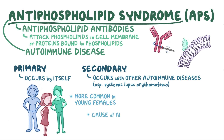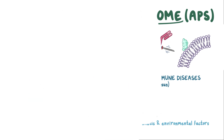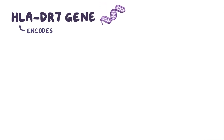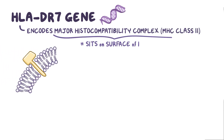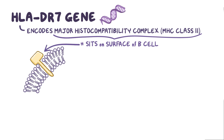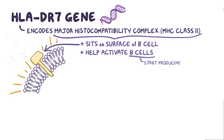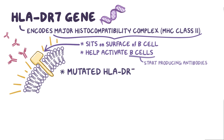The exact cause of antiphospholipid syndrome isn't known, but there are some known genetic and environmental factors. For example, the HLA-DR7 gene encodes a specific type of protein called the major histocompatibility complex, or MHC class 2, which sits on the surface of the B cell. These surface proteins help activate B cells so that they can start producing antibodies. Having a mutated HLA-DR7 gene predisposes individuals to activate B cell production of antiphospholipid antibodies.